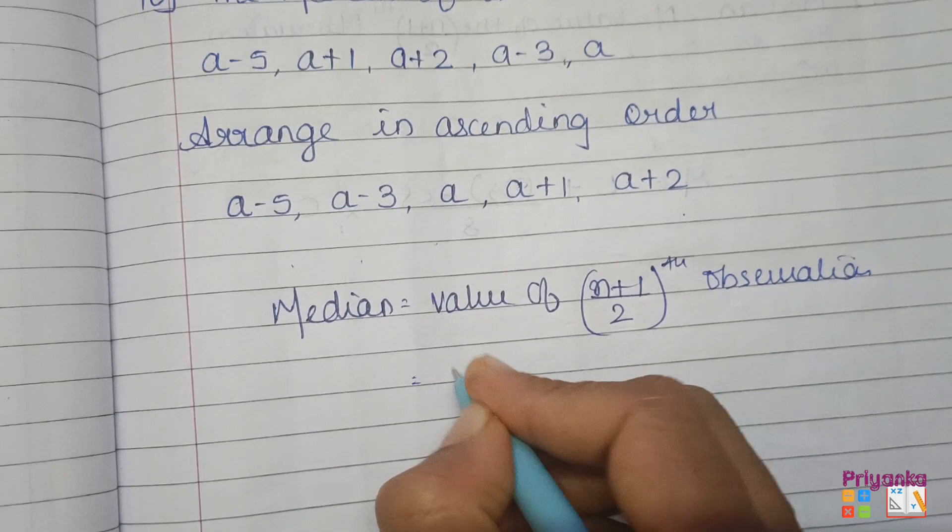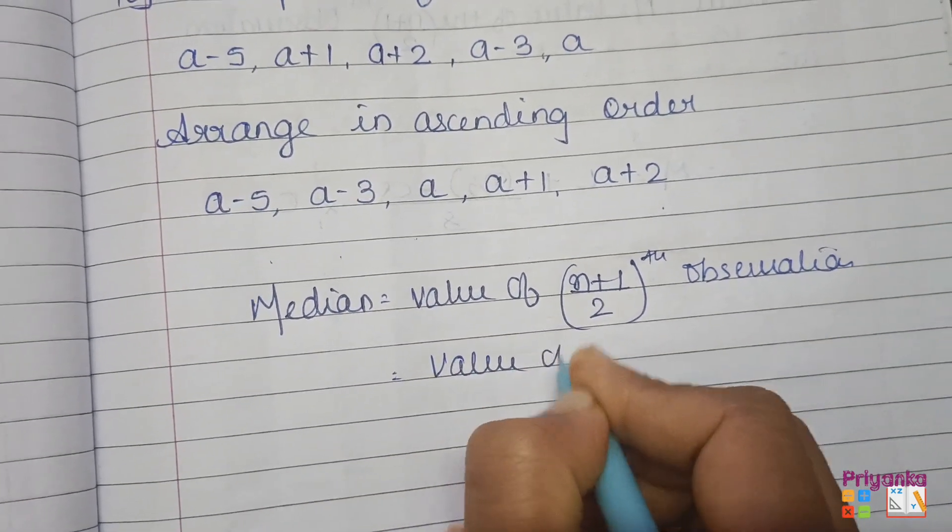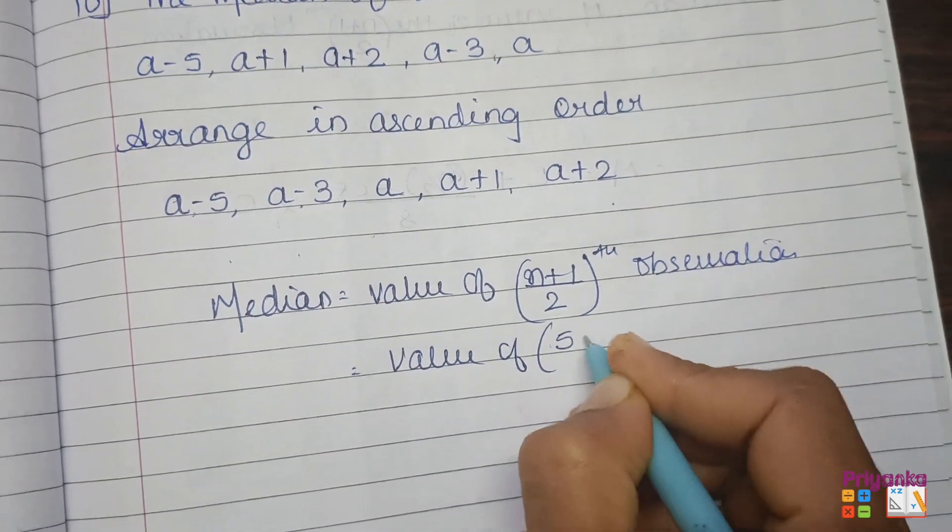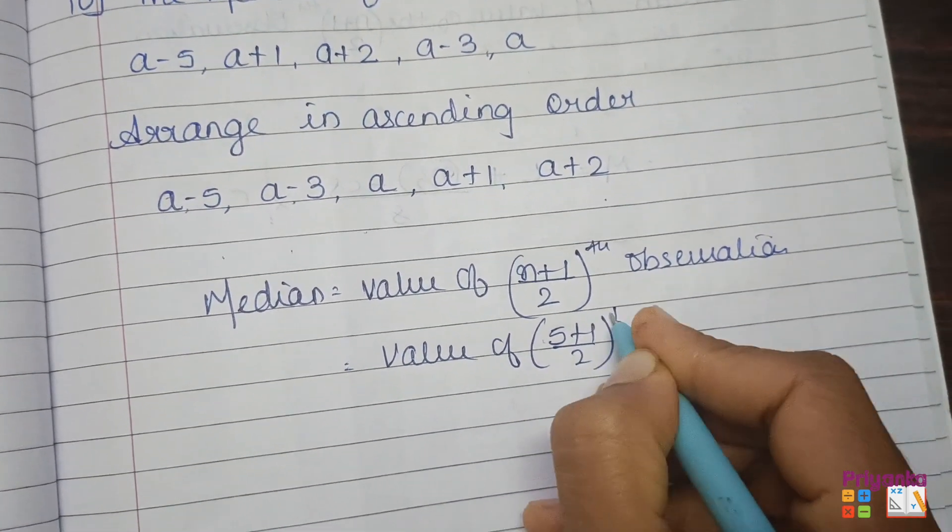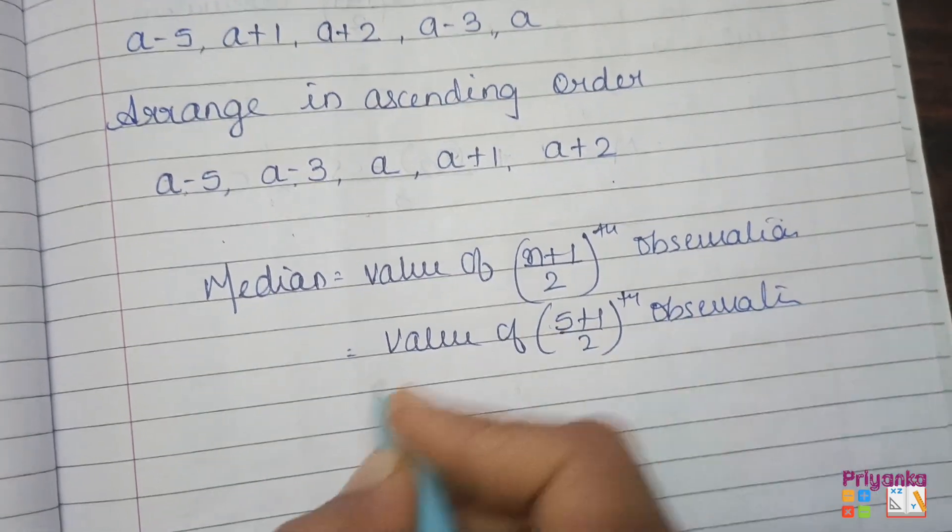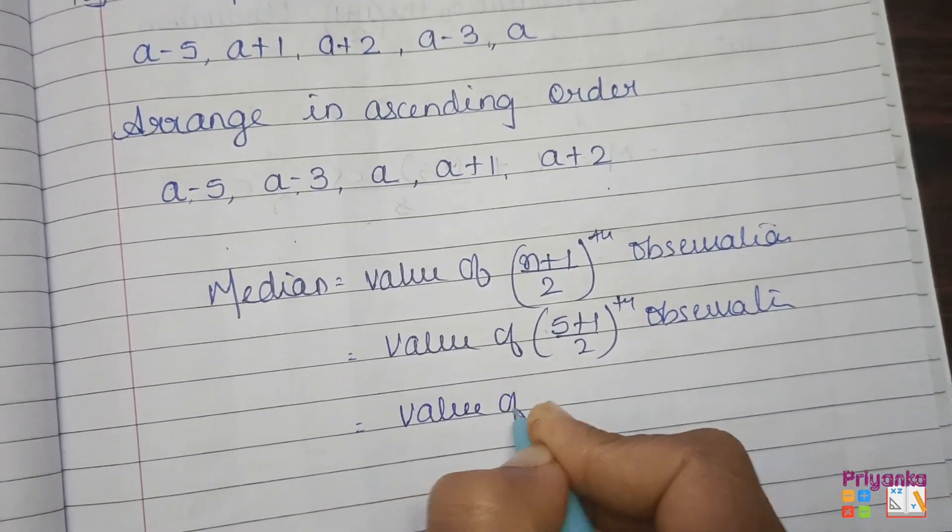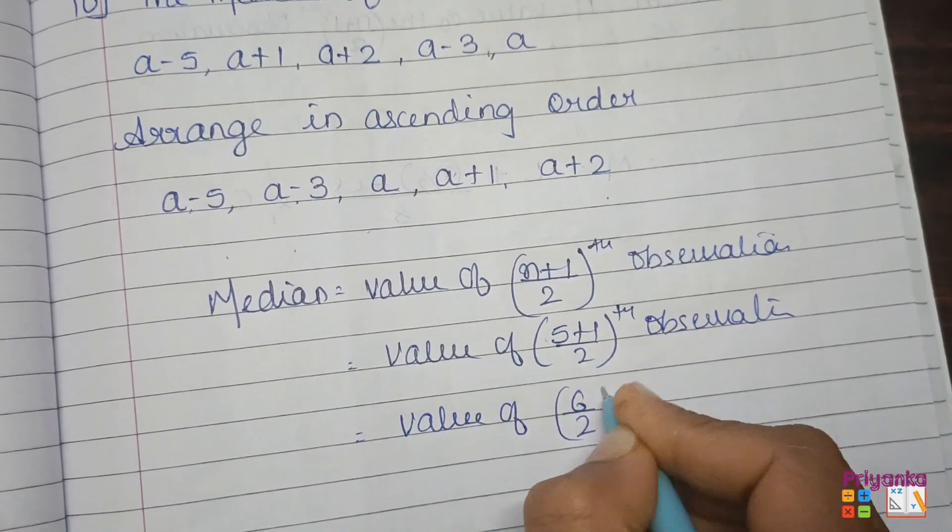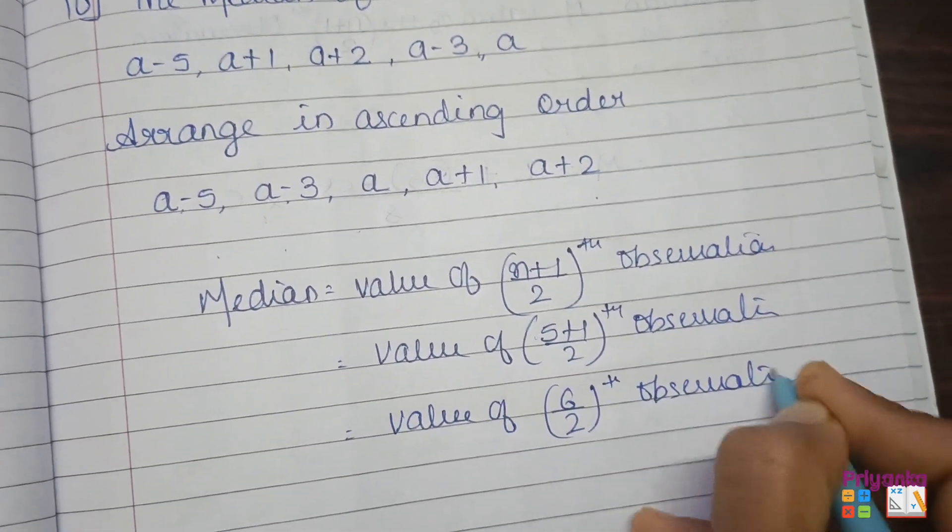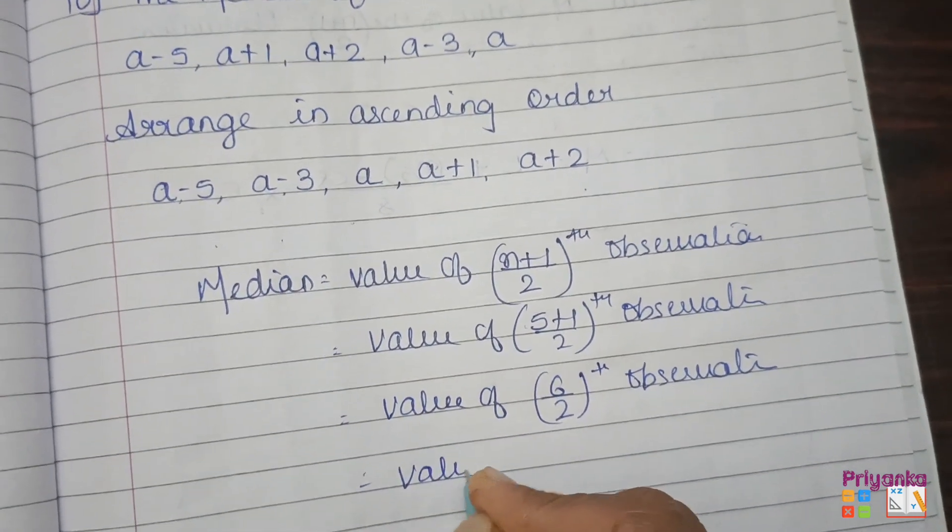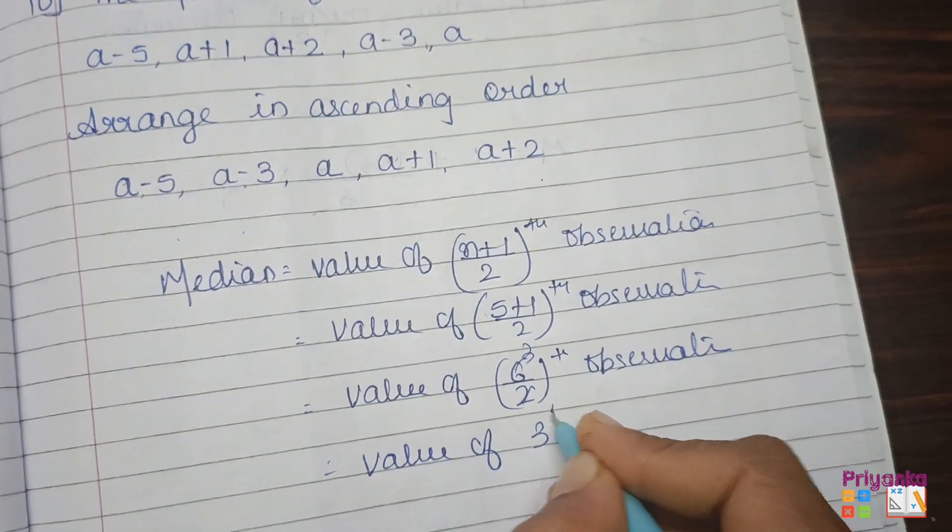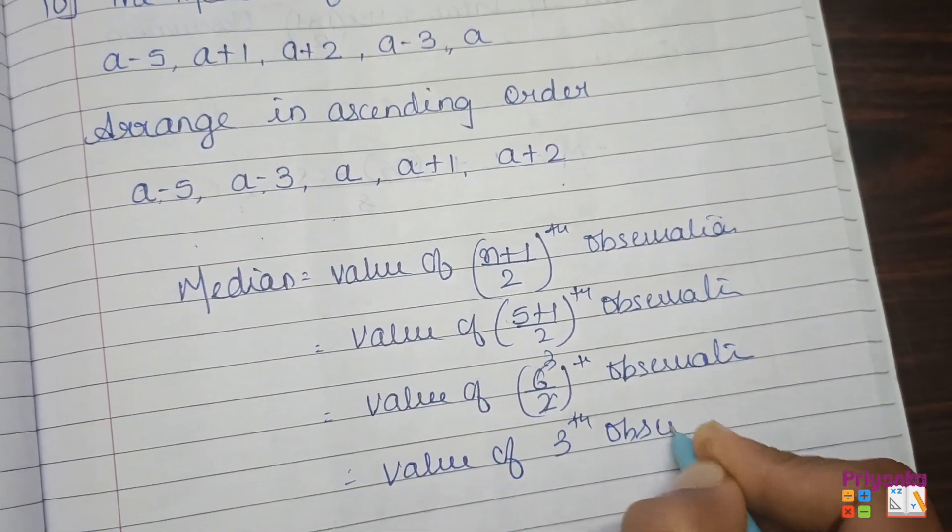As we can see, total observations are 1, 2, 3, 4, 5, so n is 5 plus 1 divided by 2. So here we get the answer 6 divided by 2.